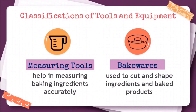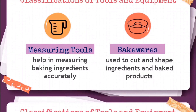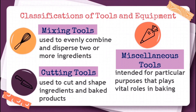Measuring tools help in measuring baking ingredients accurately. Bakewares are used to cut and shape ingredients and baked products. Mixing tools are used to evenly combine and disperse two or more ingredients. Cutting tools are used to cut and shape ingredients and baked products. Miscellaneous tools are intended for particular purposes that play vital roles in baking.